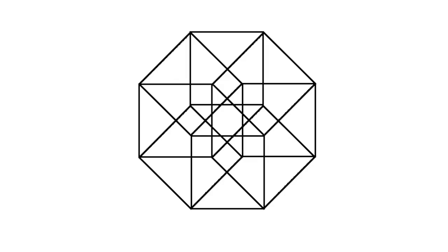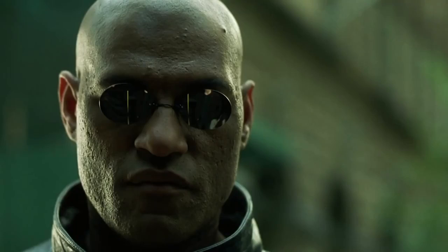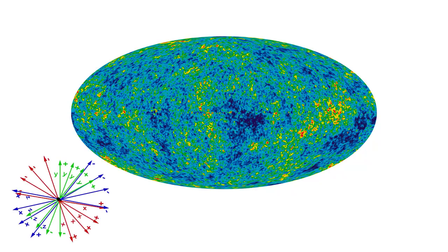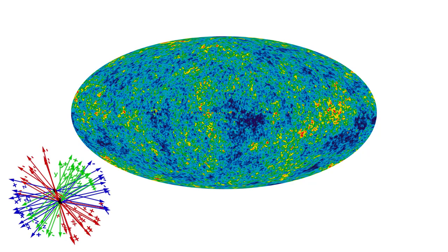But what if I told you our universe is made up of not three but 11 or even 26 dimensions? We'll speak about that in a second. First of all, at least to imagine how a fourth dimensional object would look like, we have to make an analogy using our three dimensions.